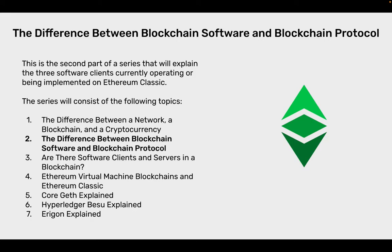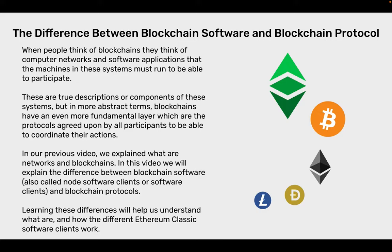The series will consist of the following topics: one, the difference between a network of blockchain and a cryptocurrency; two, the difference between blockchain software and blockchain protocol, which is this video; three, are there software clients and servers in a blockchain; four, Ethereum Virtual Machine blockchains and Ethereum Classic; five, CoreGeth Explained; six, Hyperledger Besu; seven, Eragon Explained. These last three are the actual software clients in Ethereum Classic.